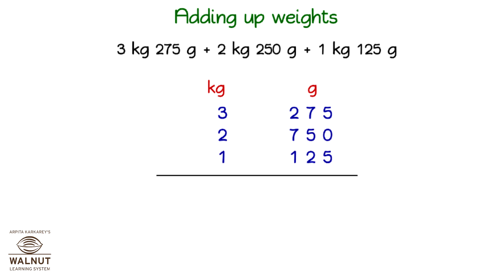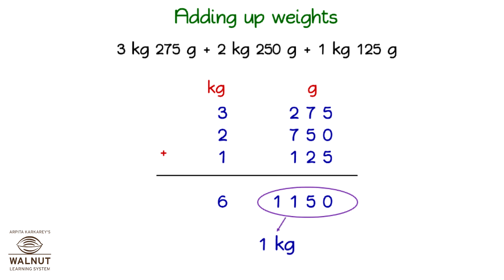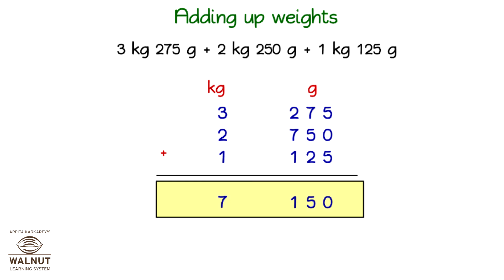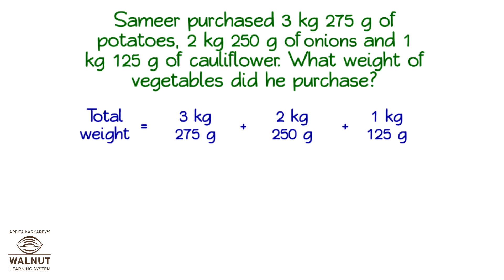Then we get ready to add. Look at the unit under grams — it's more than 1,000. We know that 1,000 grams equals 1 kg, so we split this as 1 kg and keep the remaining grams. We then add up the kilograms and keep the remaining grams. The answer is 7 kilograms and 150 grams.